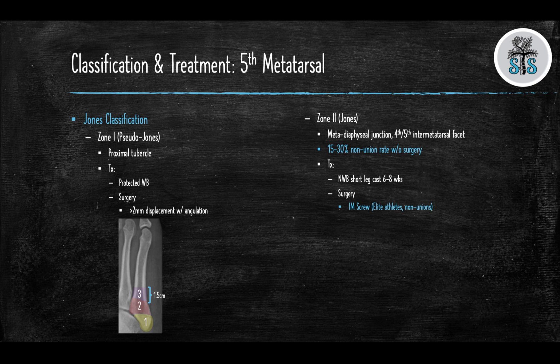Zone 2, also known as the Jones fracture, is a fracture at the metadiaphyseal junction where a transverse fracture line enters the 4th and 5th intermetatarsal facet. These fractures have a high risk of non-union without surgery at approximately 15–30%. Most patients can be treated in a short leg cast for 6 weeks with progressive weight bearing. Surgery with an intramedullary screw is considered for elite athletes and patients who develop a symptomatic non-union.